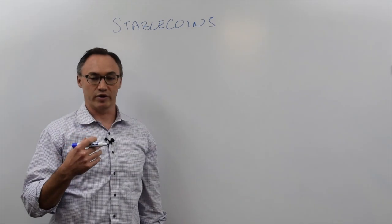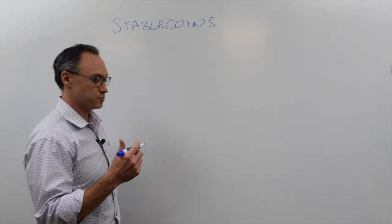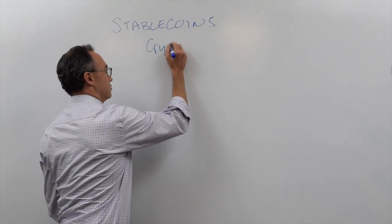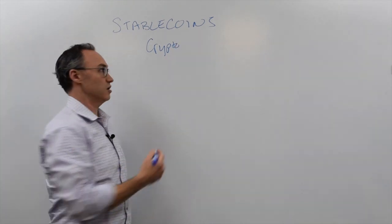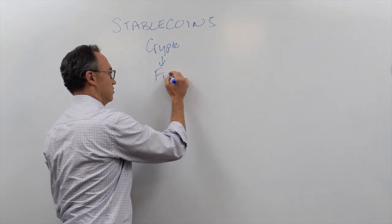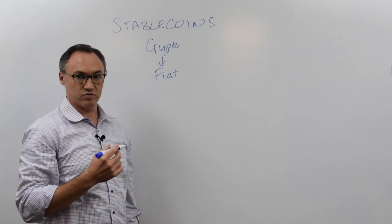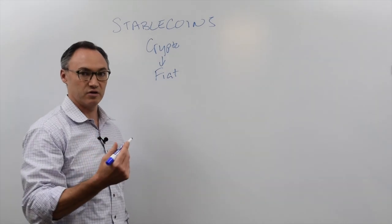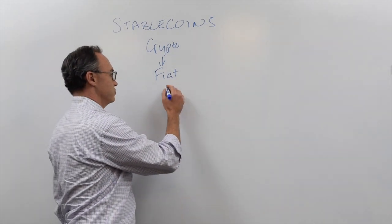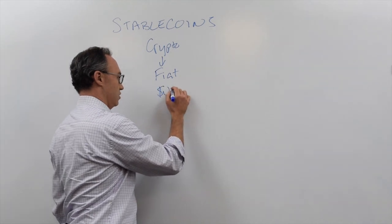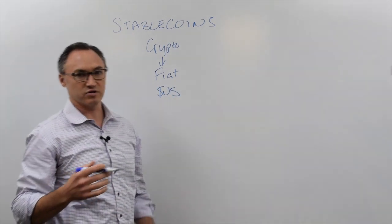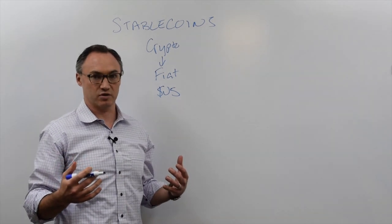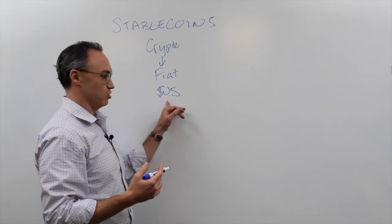A stablecoin is essentially a cryptocurrency — something that exists on a blockchain — but it's pegged, ideally, to some sort of fiat currency. A fiat currency is a currency that is issued by a government or some sort of regulatory body. Most stablecoins are pegged to the U.S. dollar, because the U.S. dollar is pretty much the currency of record for the world, used in most financial transactions.